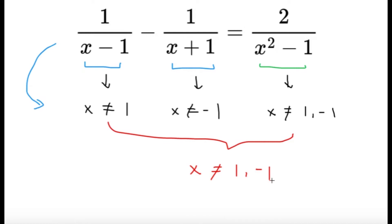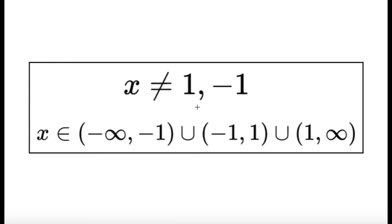So, our conclusion would simply be all real numbers x such that x is not equal to 1 or negative 1 would satisfy the equation. Now, this is a little bit unconventional. So, we can write it as an interval notation as well.